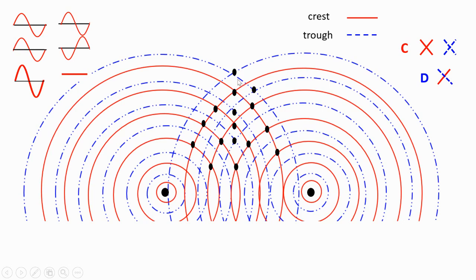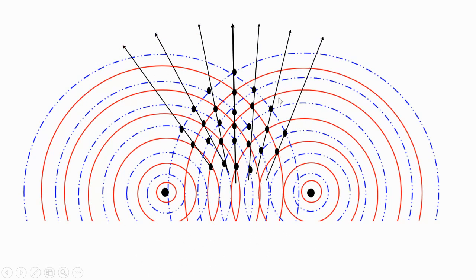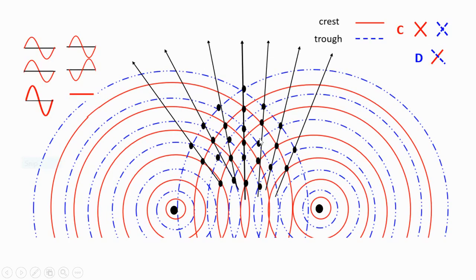Now let's connect troughs with troughs — we identify trough-with-trough intersections at all these points. We can see that those dots are kind of lined up together, and we are going to use an arrow to connect them. This arrow represents the areas of constructive interference, where crests meet with crests and troughs meet with troughs.